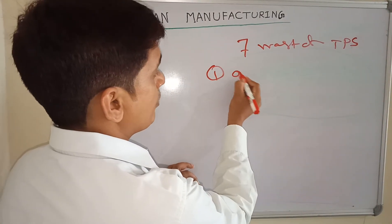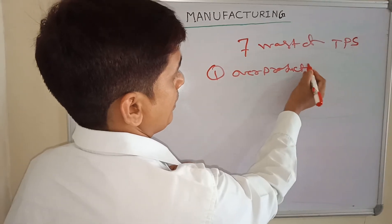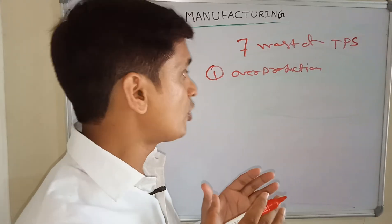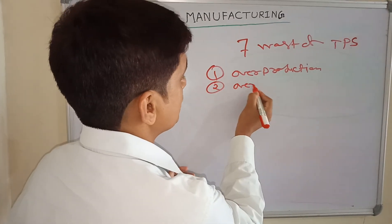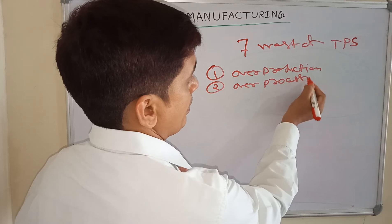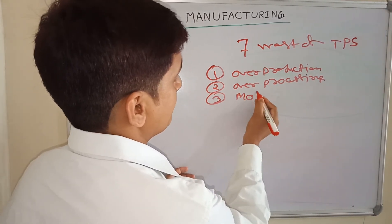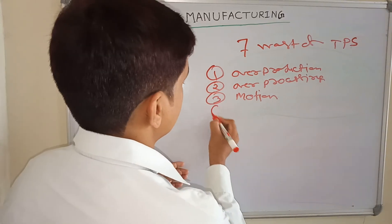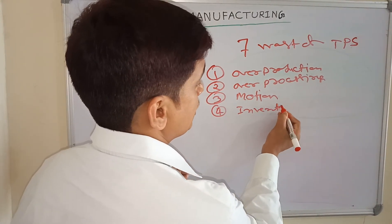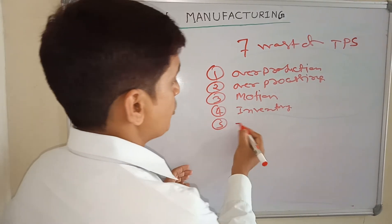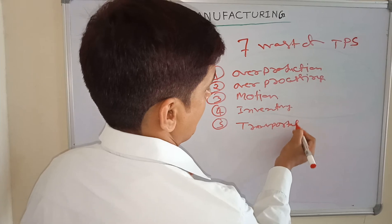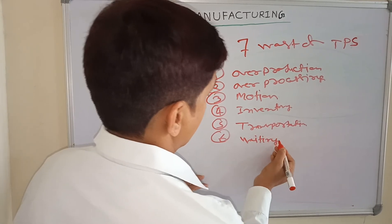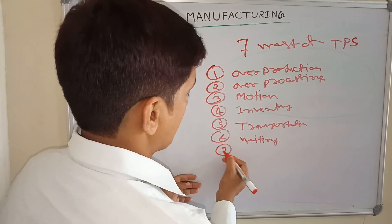The seven wastes of the Toyota Production System are: first, overproduction; second, over-processing; third, motion — the movement of people from one place to another; fourth, inventory — excess inventory is waste; fifth, transportation; sixth, waiting; and seventh, defects.